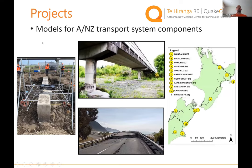When we look at individual components, we're developing improved representation of infrastructure components — better understanding of landslides and bridges, improving our representation of their performance and ways to modify that performance in future events. Research has built up looking at past earthquakes, bridge network exposure from the Kaikoura earthquake, and recent physical testing, all feeding into improved models of those system components.